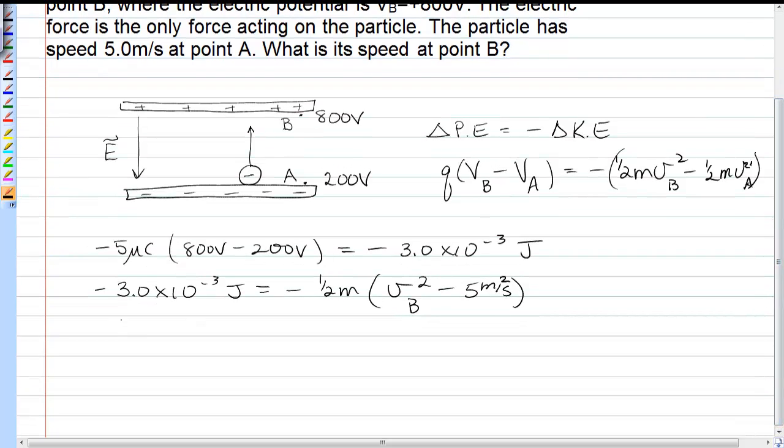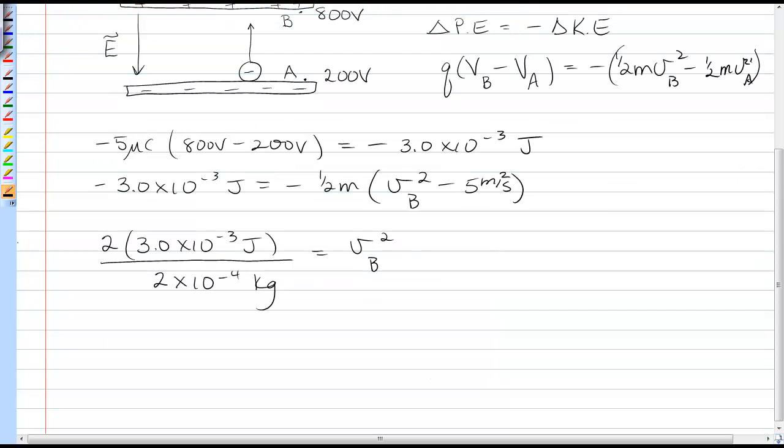Okay, so the negatives cancel, and we would have two times the change in potential energy divided by the mass, which is two times ten to the negative four kilograms, would be equal to Vb squared minus 25 meters squared per second squared.